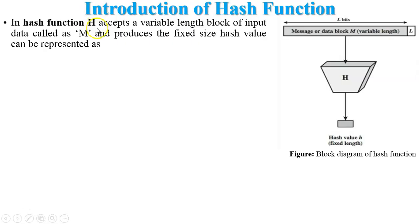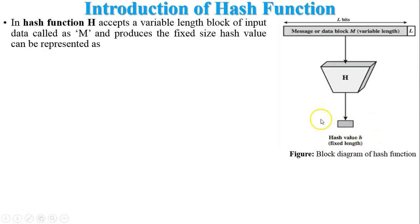The definition of a hash function: capital H denotes the hash function, which accepts a variable length block of input data called M, where M denotes the message, and produces a fixed size hash value. As shown in this block diagram, the message M has a variable length — it may be 512 bits, 600 bits, 900 bits, or anything. This data is given as input to hash function H, and it produces a hash value, called small h, which is a fixed length value. This can be represented as h = H(M), where M is the message, H is the hash function process, and small h is the hash value.